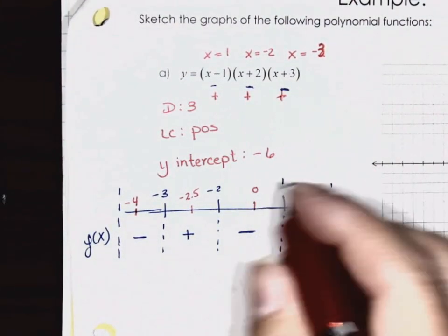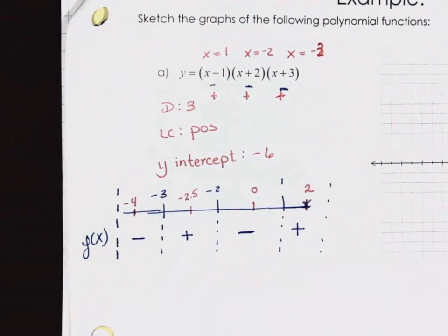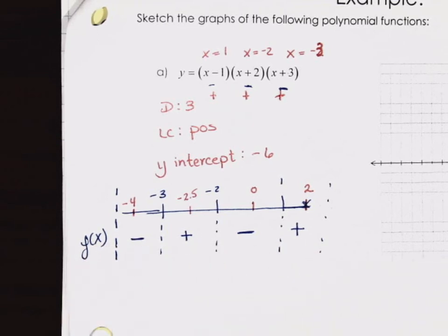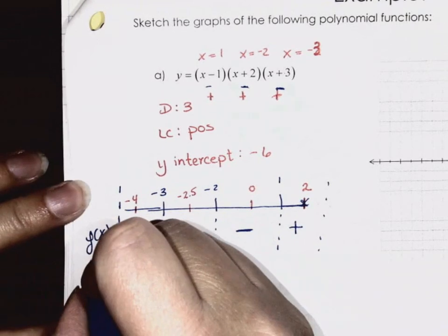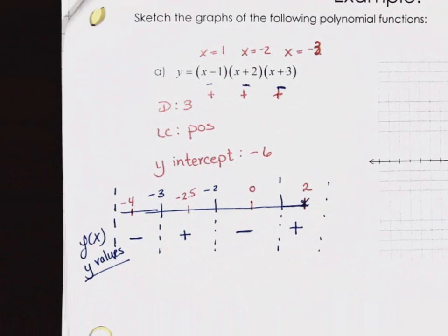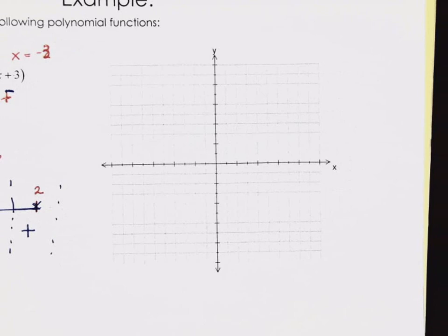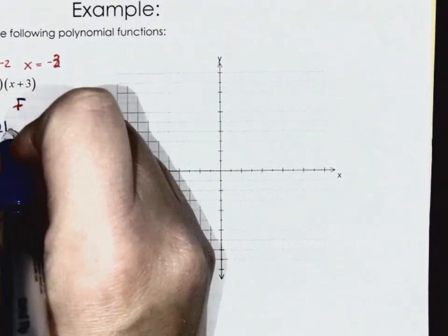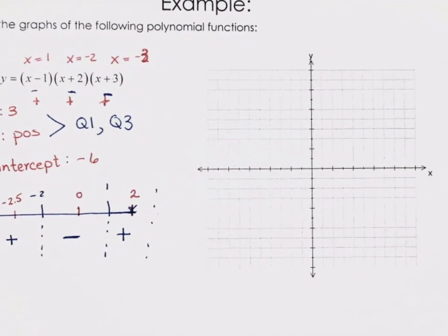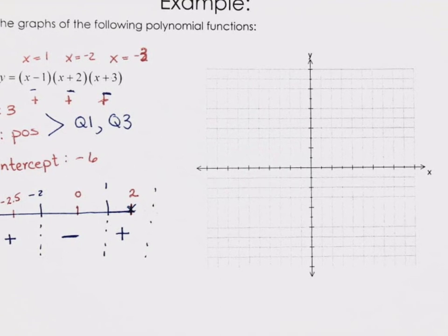Three positives multiplied together give positive. So this tells us what the y-values are doing. Now we can graph: we know it should end in quadrant 1 and quadrant 3, we have a y-intercept of negative 6, we know where our x-intercepts are, and we know where y should be in between those x-intercepts.